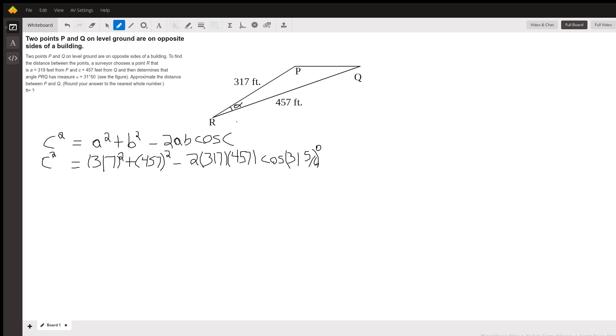Now what we know in this problem is we are given that there's points P and Q that are located on opposite sides of a building, and there's a point R on the ground which is 317 feet away from P as the crow flies, and 457 feet away from Q as the crow flies.